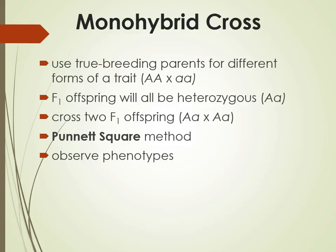The technique that Gregor Mendel was using, and what we continue to use to understand these concepts, is called the monohybrid cross. This means we start with true breeding parents — a homozygous dominant crossing with a homozygous recessive. We know they are true breeding because we can self-pollinate over and over again and only get the dominant trait here, and only the recessive trait there.